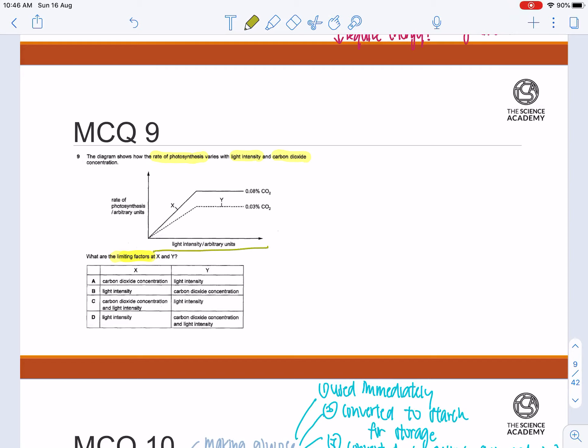First of all, let's first define limiting factors. Limiting factors are essentially factors that hinder the rate of photosynthesis. Essentially, by increasing limiting factors, the rate of photosynthesis will also be increased.